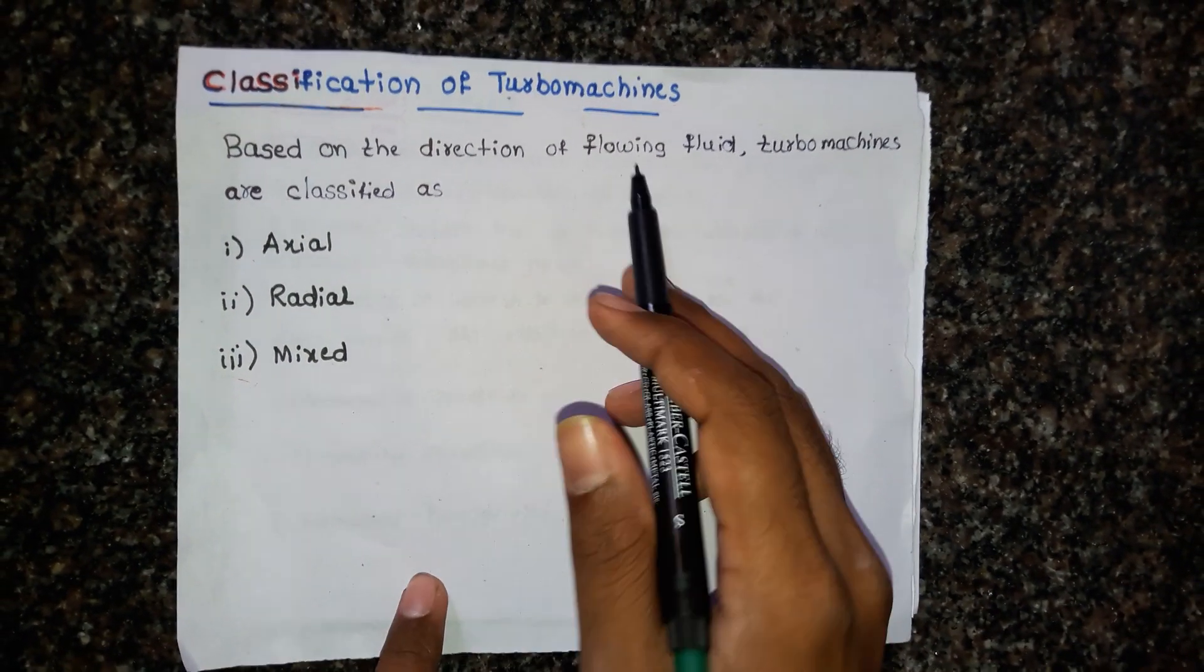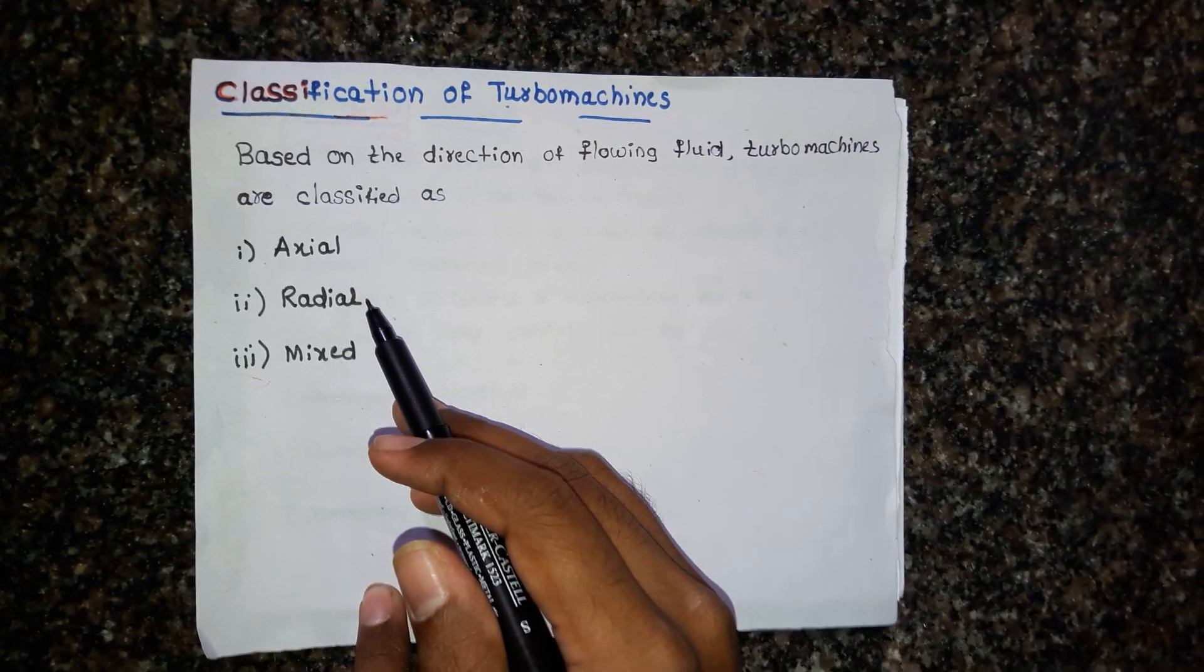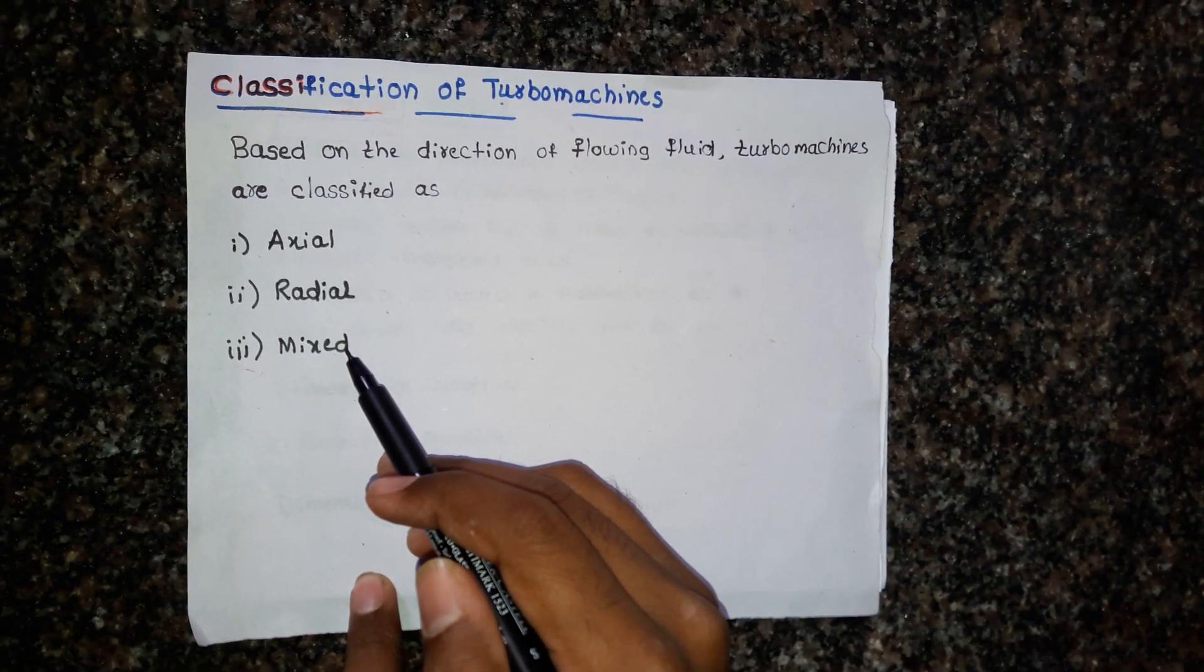Turbomachines are classified as axial flow turbomachines, radial flow turbomachines, and mixed type turbomachines.